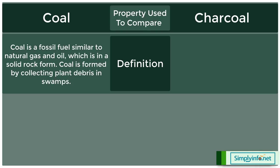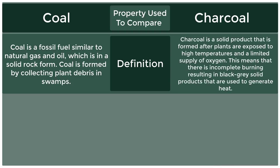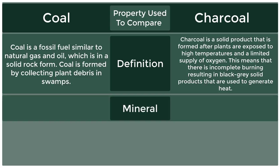Coal is formed by collecting plant debris in swamps. Definition of charcoal: charcoal is a solid product that is formed after plants are exposed to high temperatures and a limited supply of oxygen, resulting in incomplete burning and black-gray solid products used to generate heat. Coal is a mineral; charcoal is not a mineral.